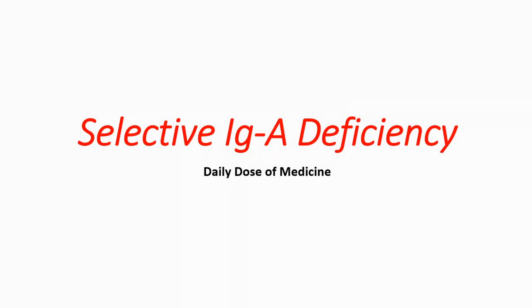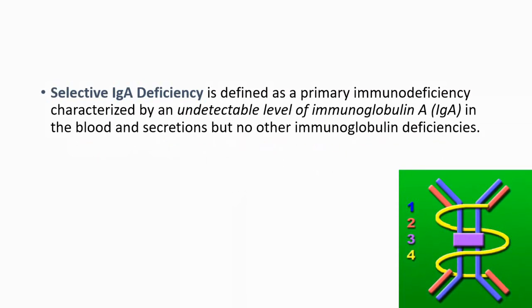The topic we're going to talk about today is selective IgA deficiency. It is defined as a primary immunodeficiency characterized by undetectable levels of IgA in the blood and secretions, but no other immunoglobulin deficiencies. You're going to have normal levels of IgG, IgM, and other immunoglobulins, but your IgA levels will be low or undetectable.